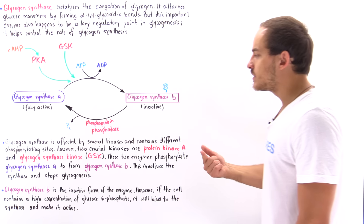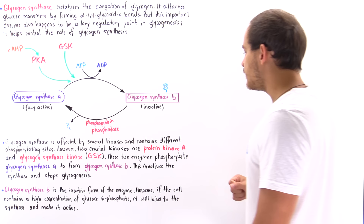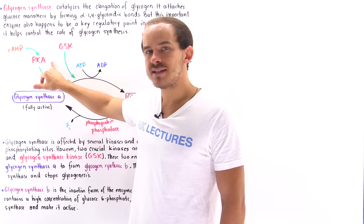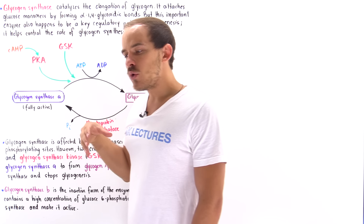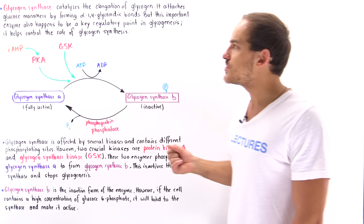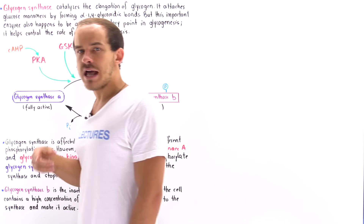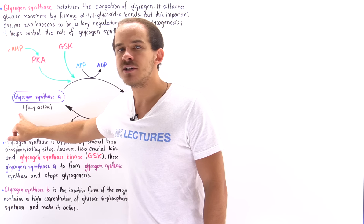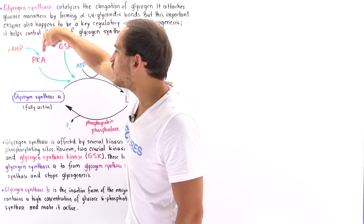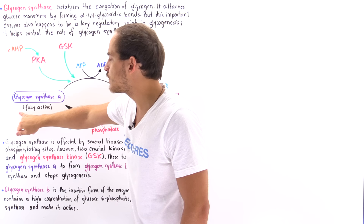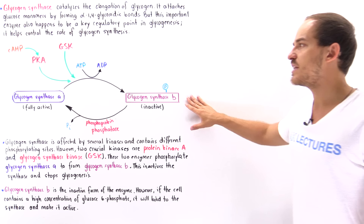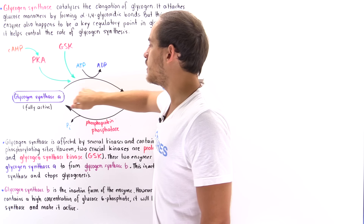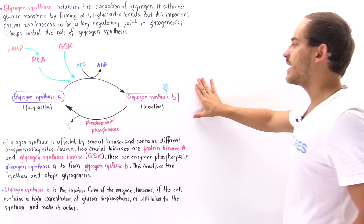Two very important kinases that turn off glycogen synthase A are protein kinase A and glycogen synthase kinase. Protein kinase A is stimulated by cyclic AMP, so if a signal transduction pathway increases cyclic AMP concentration within the cell, that stimulates PKA, whose target proteins include glycogen synthase A. This promotes the transformation of glycogen synthase A into glycogen synthase B. Similarly, glycogen synthase kinase also stimulates that same transformation.